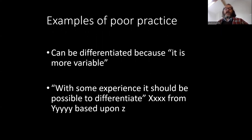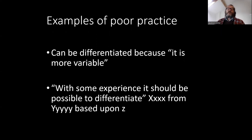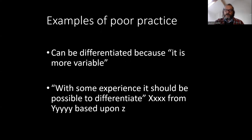A couple of examples: 'It can be differentiated because it's more variable.' Well, that's useful — I've got a specimen, is it more variable? I don't know. Maybe this thing that looks like it but is different is different, or maybe it's the same because it's variable. 'But with some experience you should be able to tell X from Y.' Okay, well, I'd like to be able to tell X from Y. Will you please send me specimens of X and Y? My guess is that request will usually go unanswered.